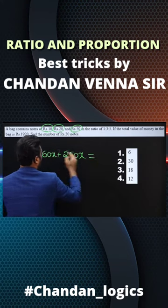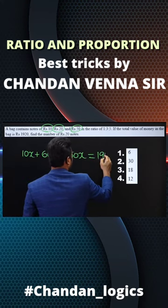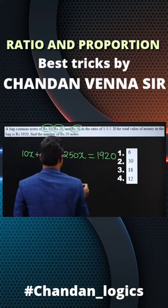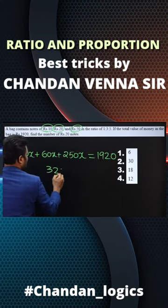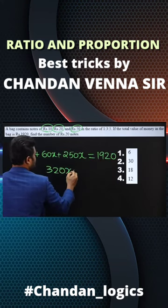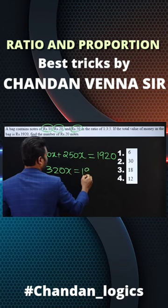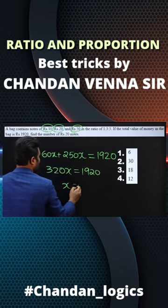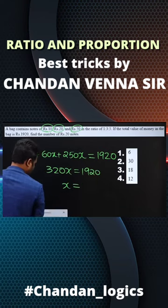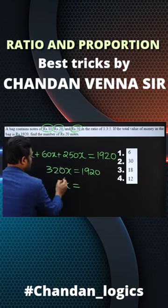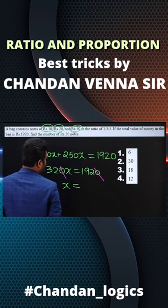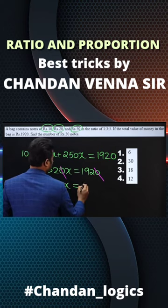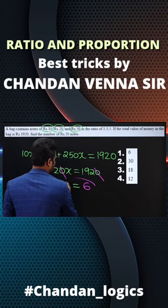This is equal to the total money, which is 1920. When you add them, the total will be 320x equals 1920. The zeros get cancelled, and x value will be 6.